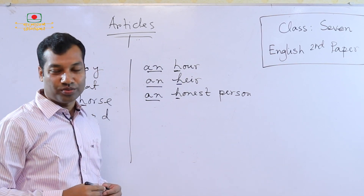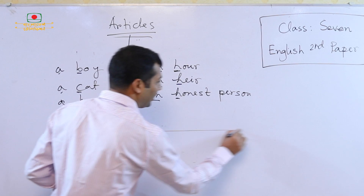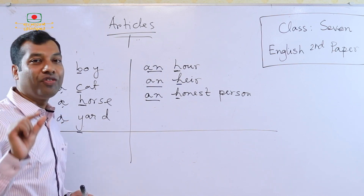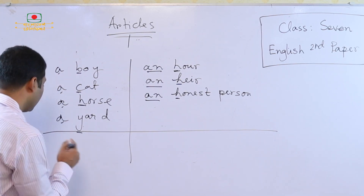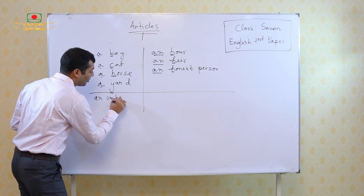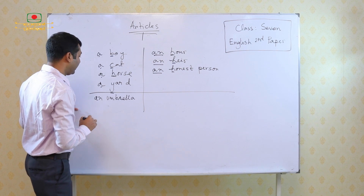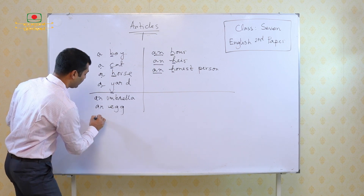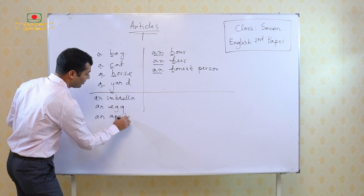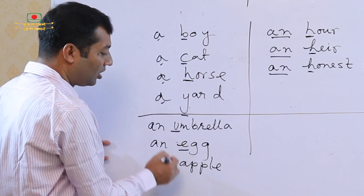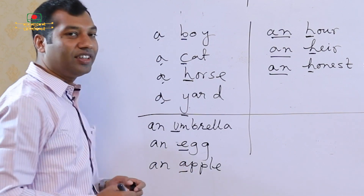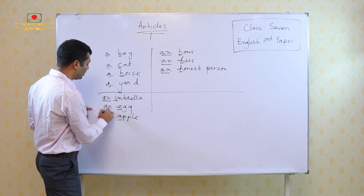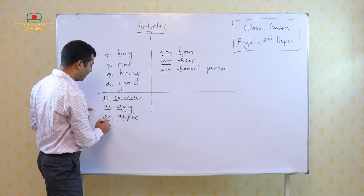Now come to the next point. At the very beginning, what I said — we use AN before a vowel sound. For example: an umbrella, an egg, an apple. Look at these words: umbrella, egg, apple. The initial sound is a vowel sound. So as they are vowels, we are using AN before them: an umbrella, an egg, an apple.